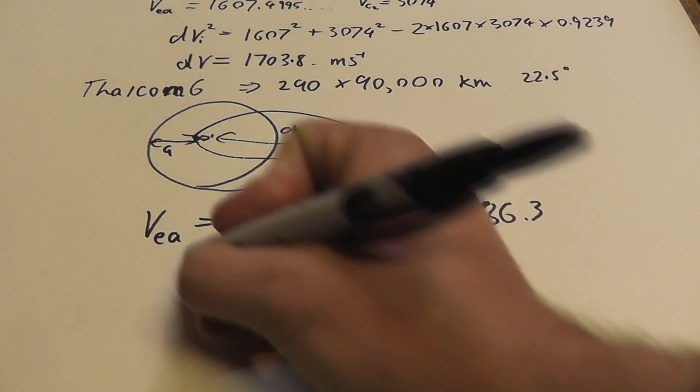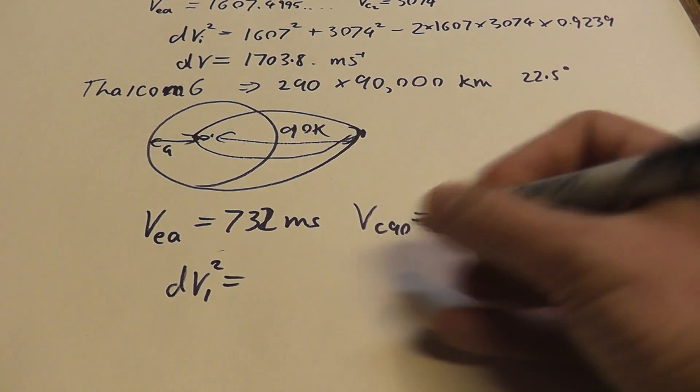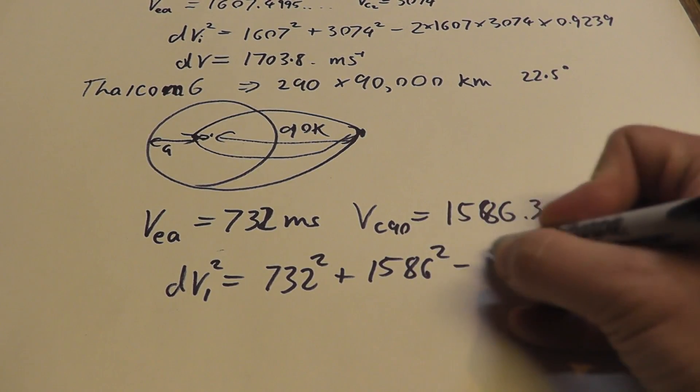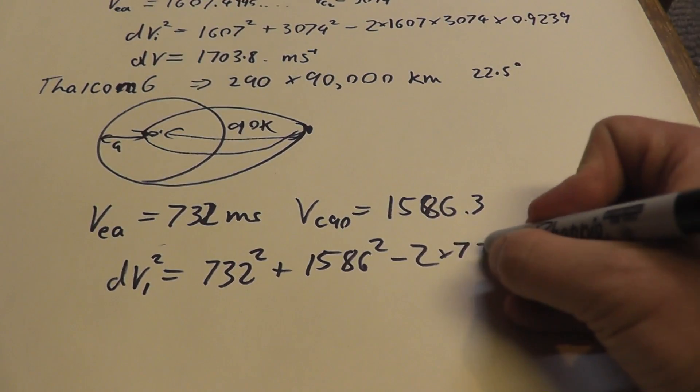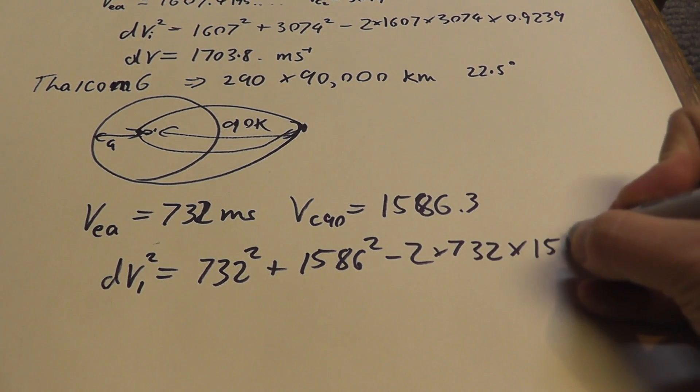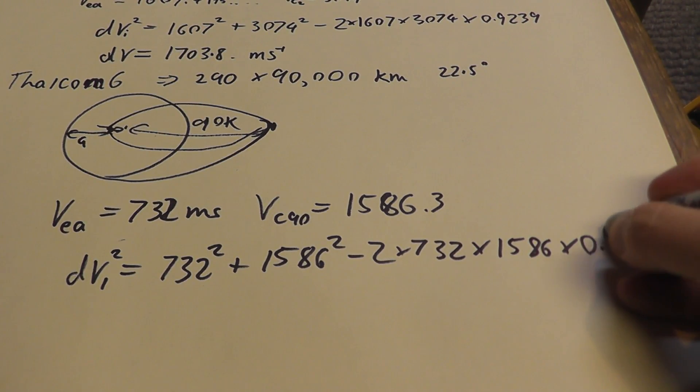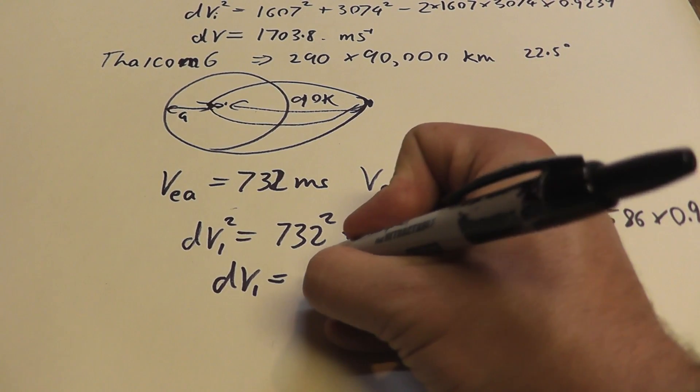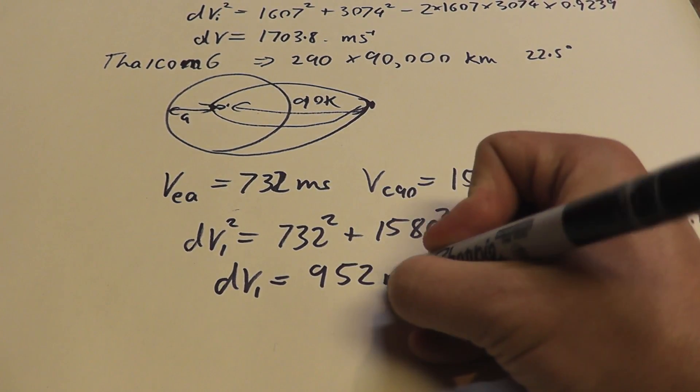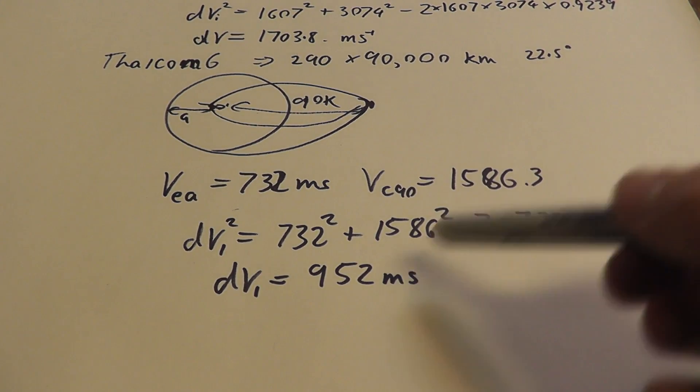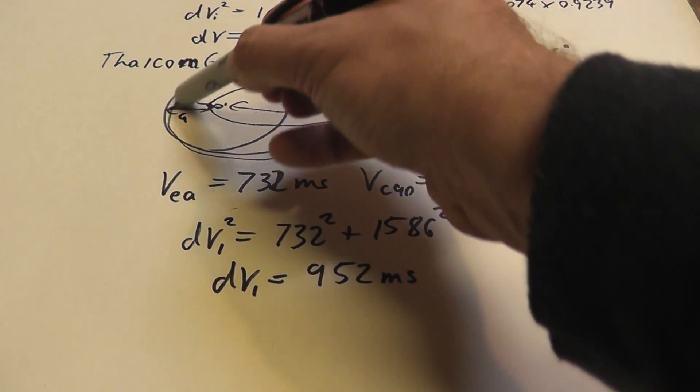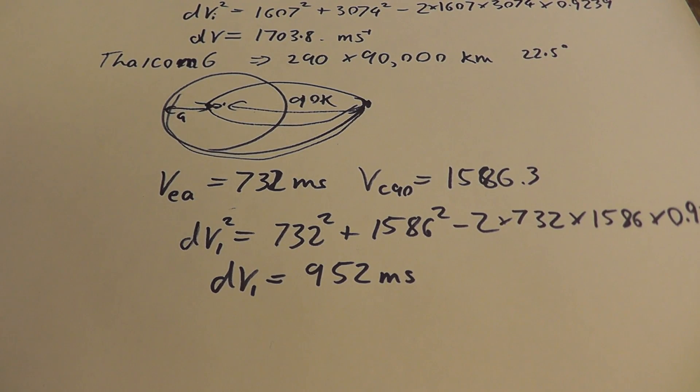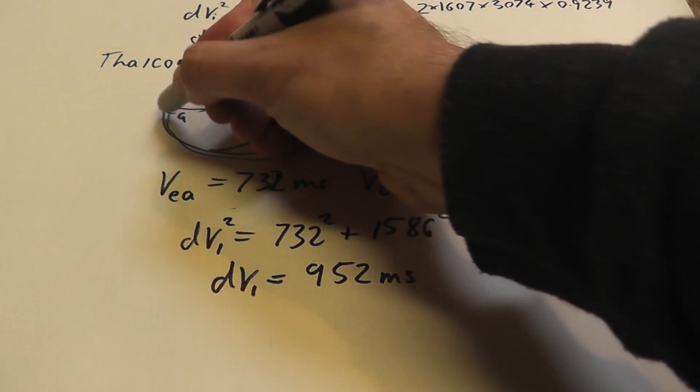We do DV1 squared is equal to 732 squared plus 1586 squared minus 2 times 732 times 1586 times 0.9239. And then we come out that delta V1 is equal to 952 meters per second. But now, we have to get down from this orbit. This is us transferring into this elliptical orbit. Now, from this elliptical orbit, we have to go into a circular orbit here. We have to come down, and we'll jump into this orbit here.